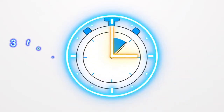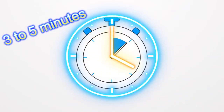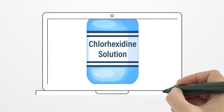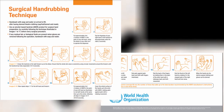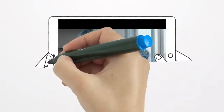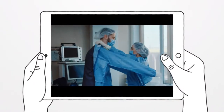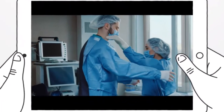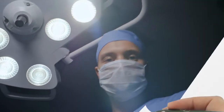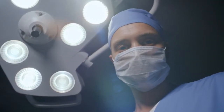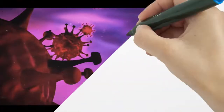Surgical scrubbing usually takes between three and five minutes, during which every surface of the surgeon's hands is vigorously scrubbed with a special antiseptic soap using a specific technique to further reduce the risk of contamination. After scrubbing in, the surgeon must not touch anything until they wear a sterile gown and gloves. Finally, after donning the sterilized PPE, the surgeon can approach the patient.